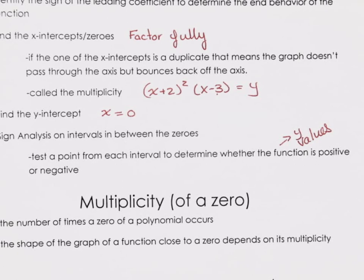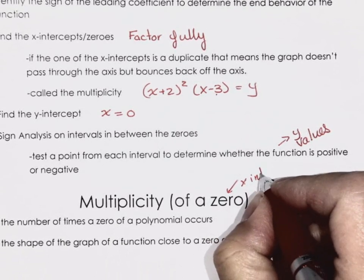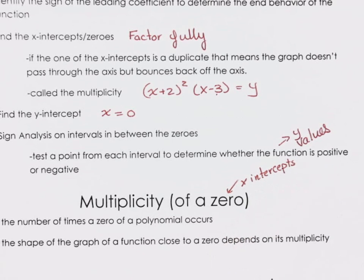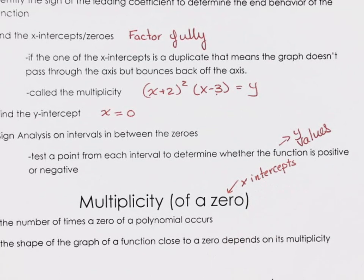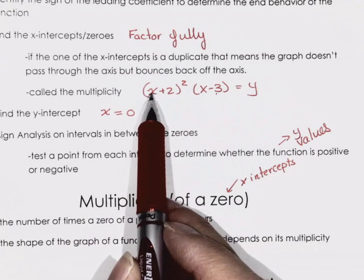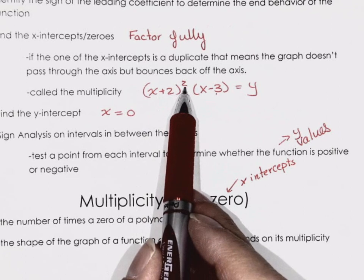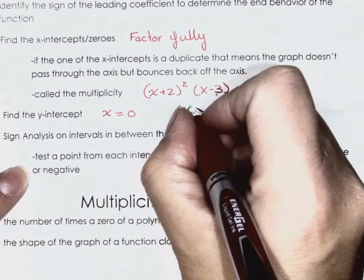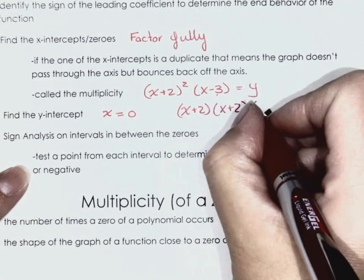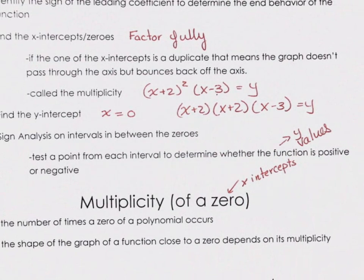When I say 'zero of a function,' I mean an x-intercept. So when I say multiplicity of a zero, I'm talking about x-intercepts — how many times that x-intercept actually occurs. How many times does the x-intercept of negative 2 occur? Twice, because it's squared. That's the same as saying (x + 2)(x + 2)(x − 3) = y, so we have two x-intercepts at negative 2.